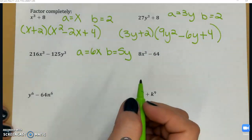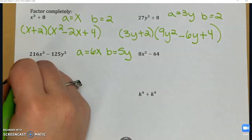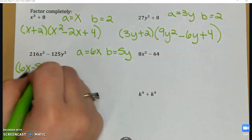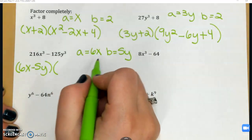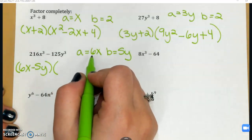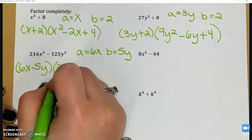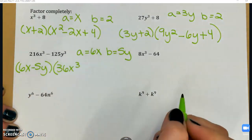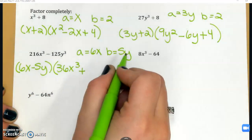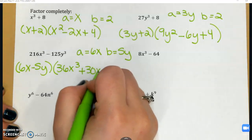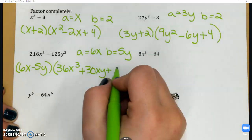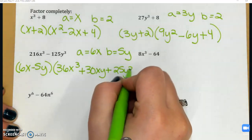Plug those into my formula for difference of cubes. It's going to be (6x - 5y) times a². When I square 6x, remember I square the coefficient and the variable, so that's going to be 36x². Plus a times b is going to be 30xy, plus, when I square 5y, I get 25y².